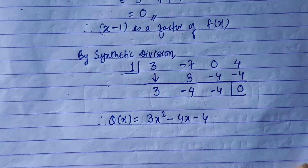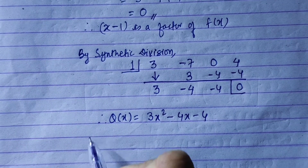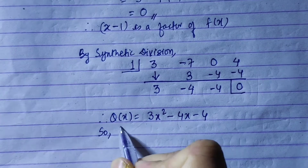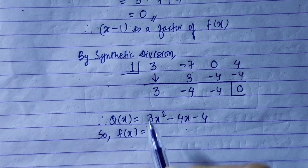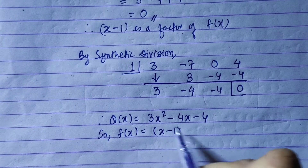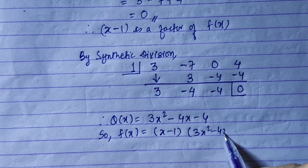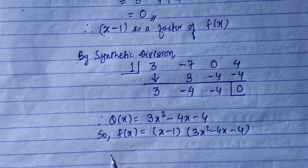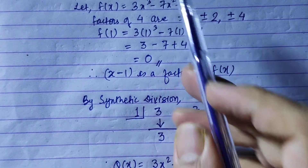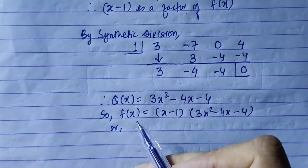The remainder is 0. Applying the division algorithm: f(x) with factor (x - 1), and the other factor is 3x² - 4x - 4. Since the remainder is 0, f(x) can be 0.